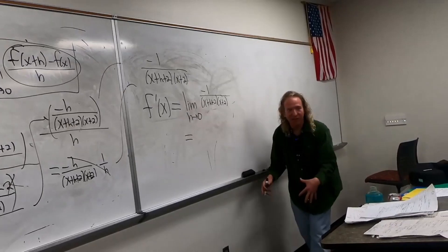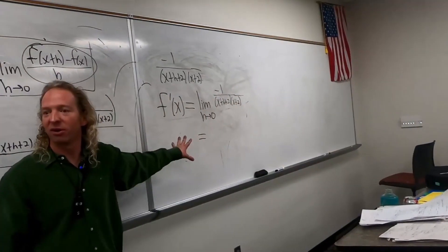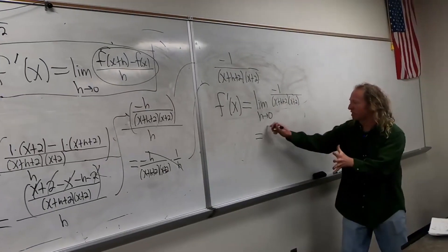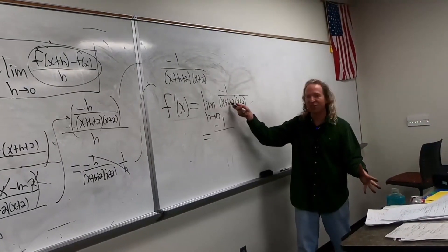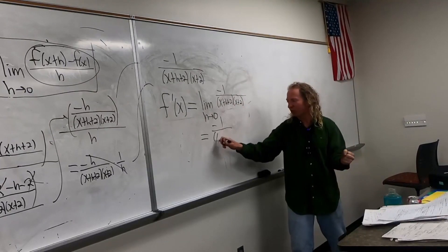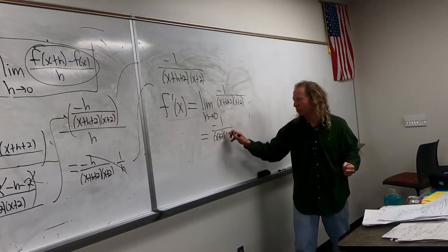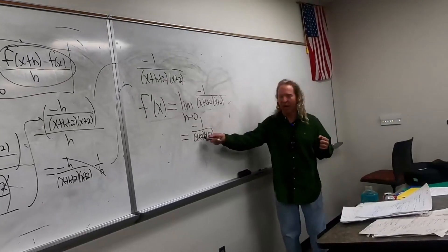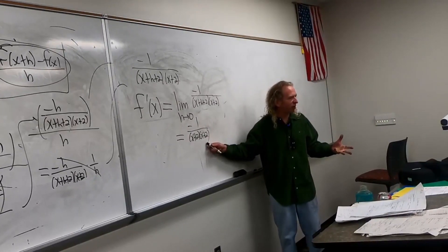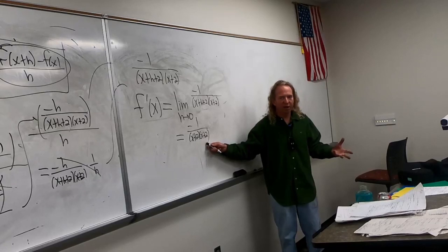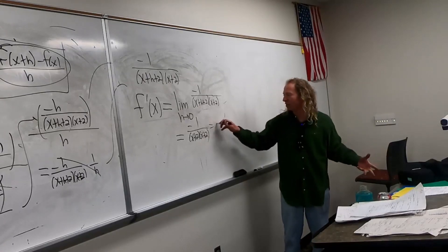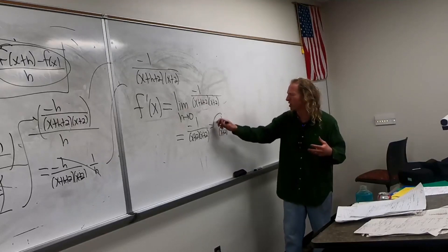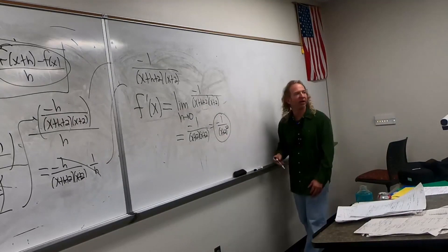So now we take the limit — we plug in 0 for h. We drop the limit sign. So it becomes negative 1 over x plus 2 times x plus 2, which is negative 1 over x plus 2 squared. Just leave it like that — don't multiply it out. That's the beautiful final answer.